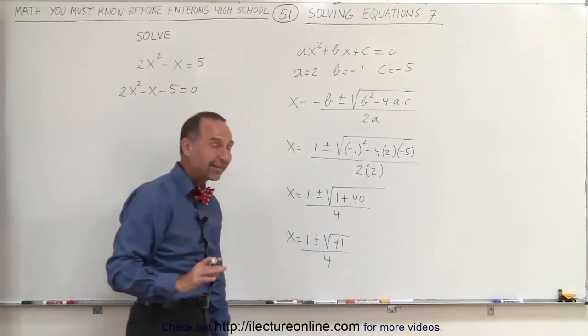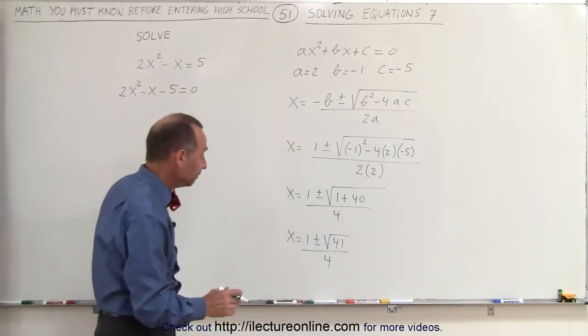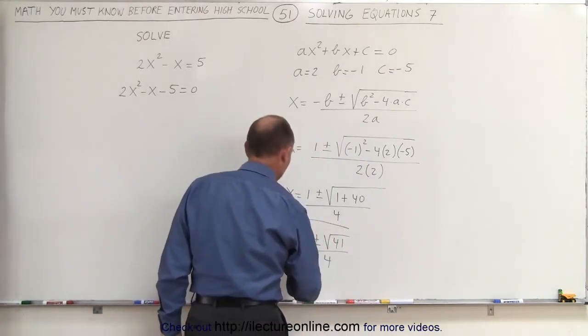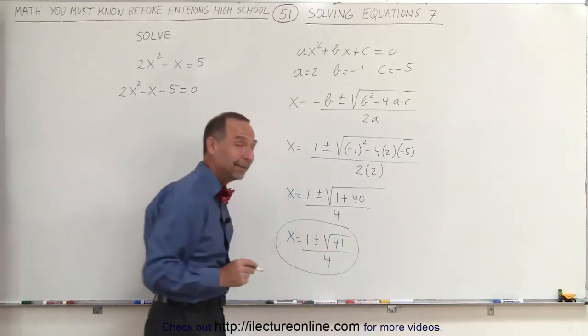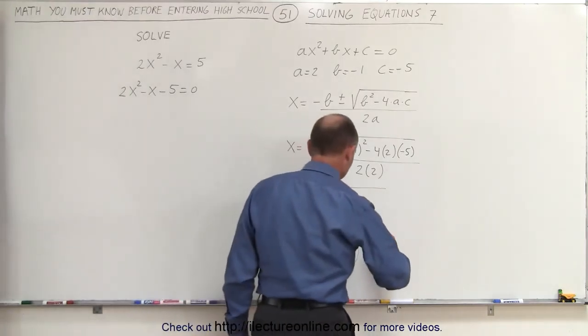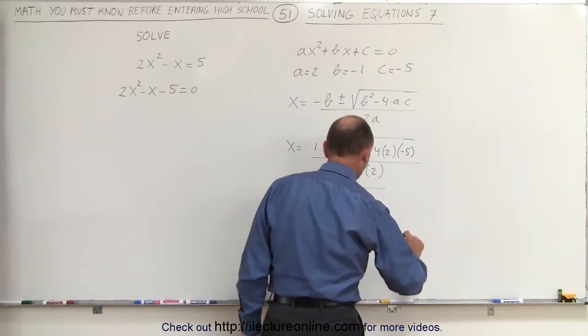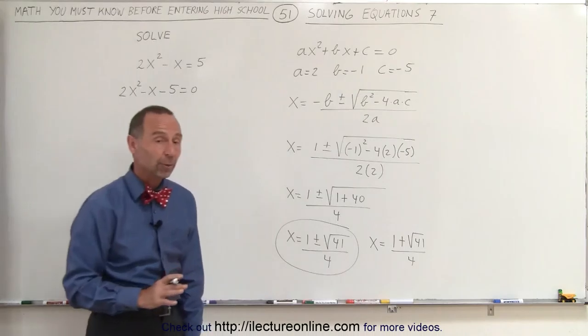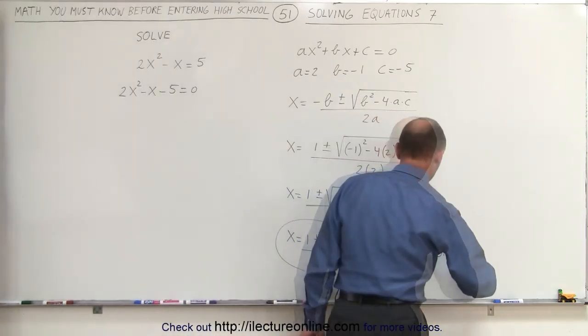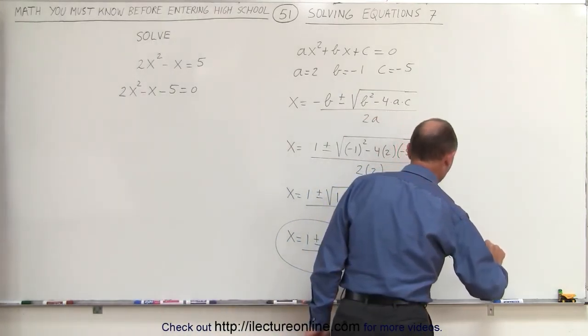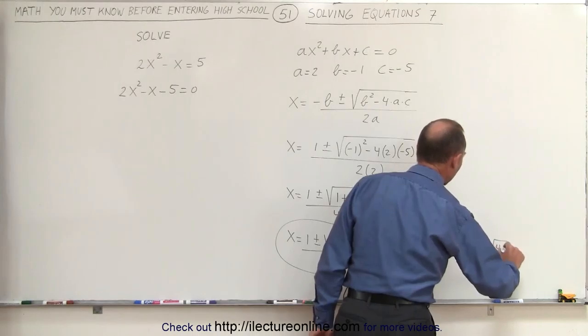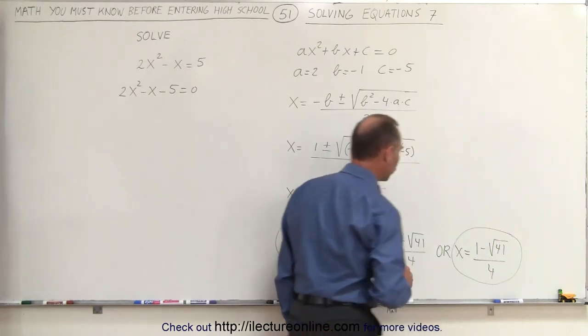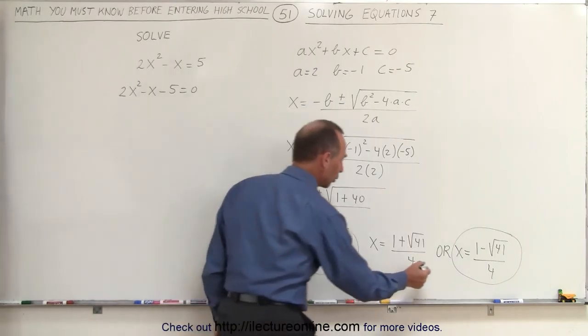Since we cannot simplify the square root of 41, we can say that this here is our solution. What we're saying is that x is equal to 1 plus the square root of 41 divided by 4—that's one of the possible solutions—or x is equal to 1 minus the square root of 41 divided by 4. So these are the two possible solutions to our original equation.